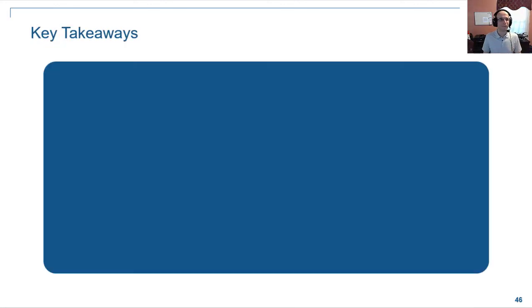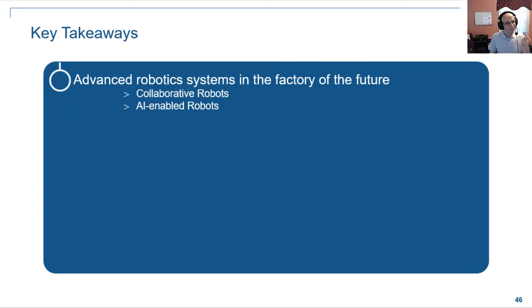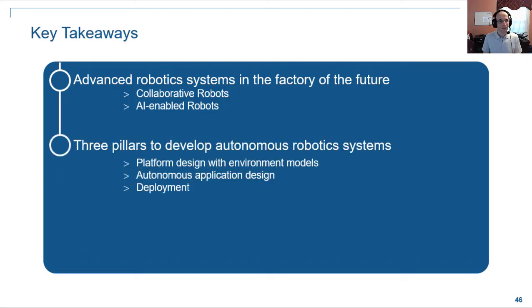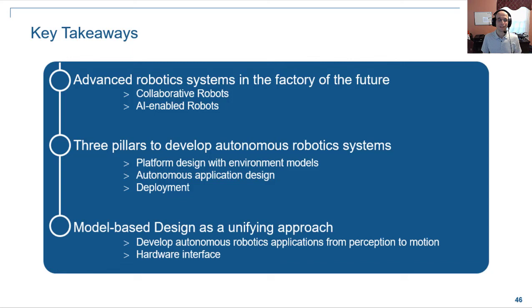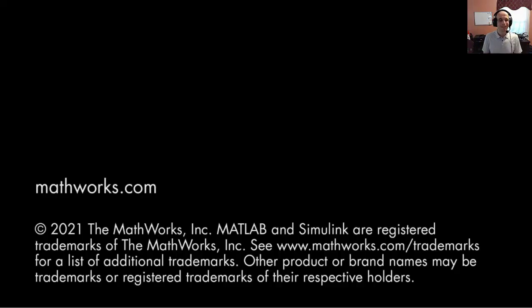So here's a quick recap of what I talked about. So I talked about advanced robotic systems and how they will shape the factory of the future. And then talked about the three pillars of what I see as important steps for developing reliable, safe, and scalable autonomous robotic systems. And, you know, I hope you got a flavor of what model-based design is and how it helps in those applications and how it helps our customers deploy those cobots. And with that, I want to say thank you. And I'm looking forward to your questions in the Q&A. Thanks.